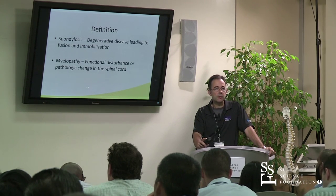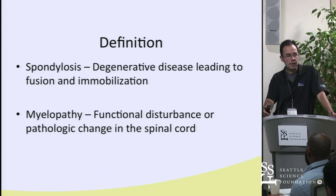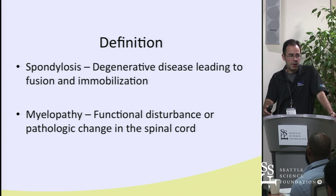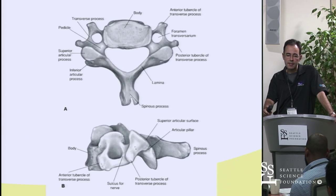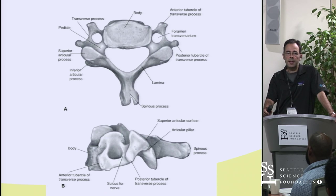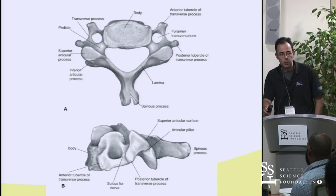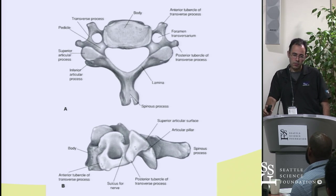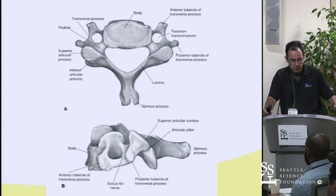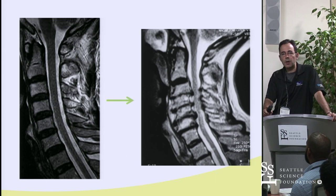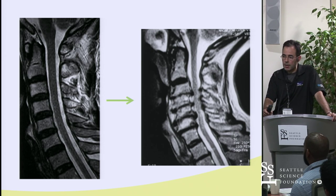Myelopathy is the functional disturbance in the spinal cord, or it could describe the pathology in the spinal cord itself. Advanced spondylosis leads to myelopathy — that's important to understand. The uncovertebral joint and its hypertrophy is often the culprit for myelopathy and the onset of cervical stenosis. Understanding where pathologic areas arise is critical when planning surgical treatments.